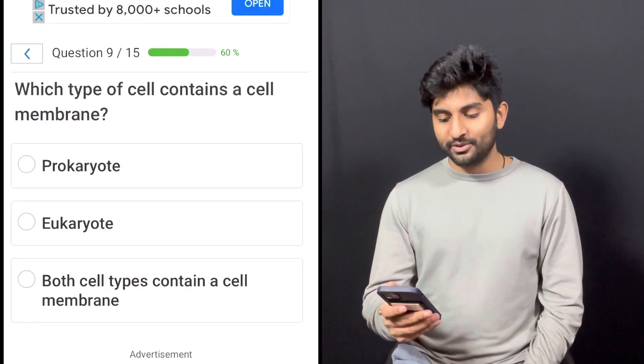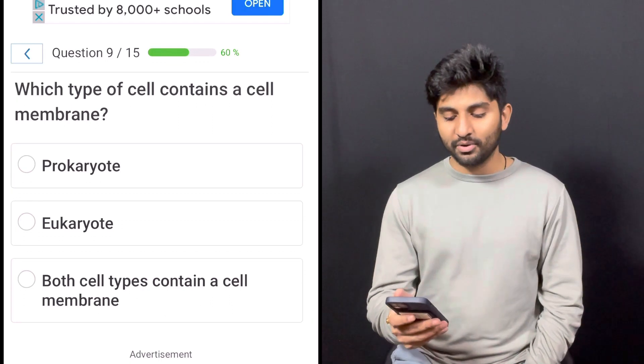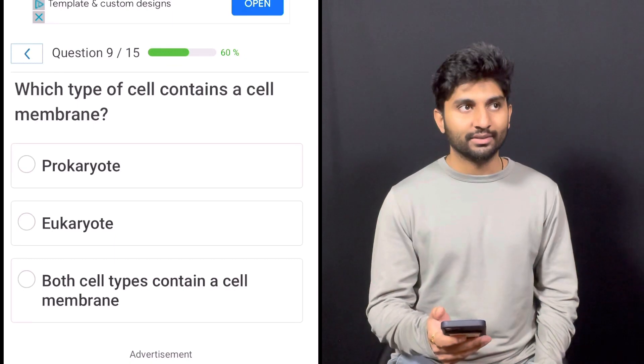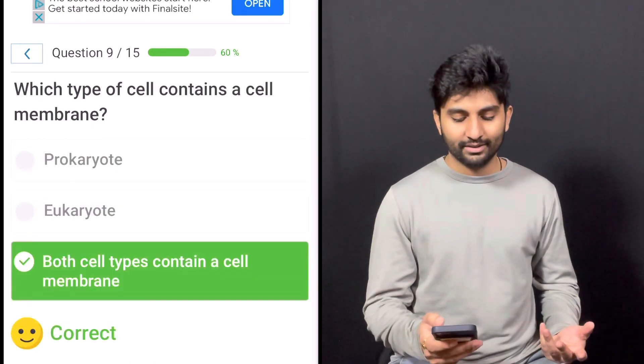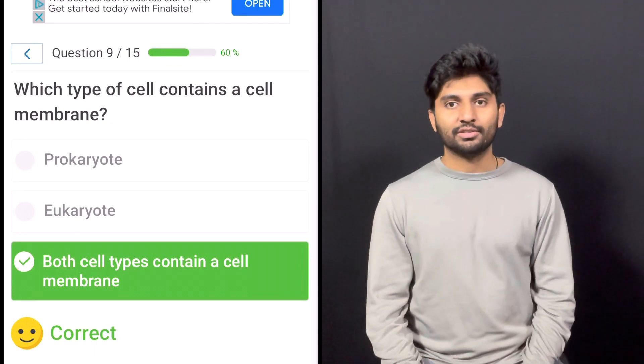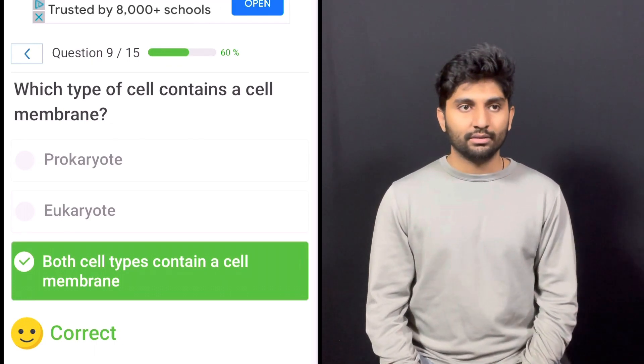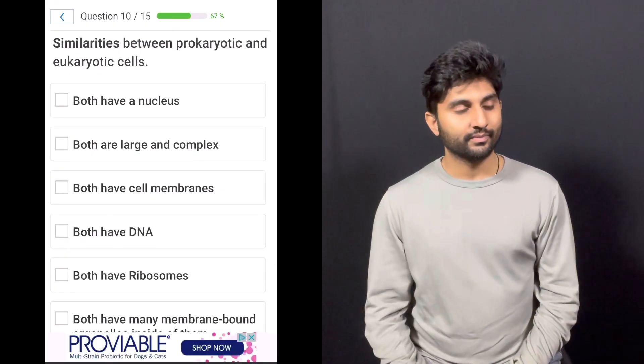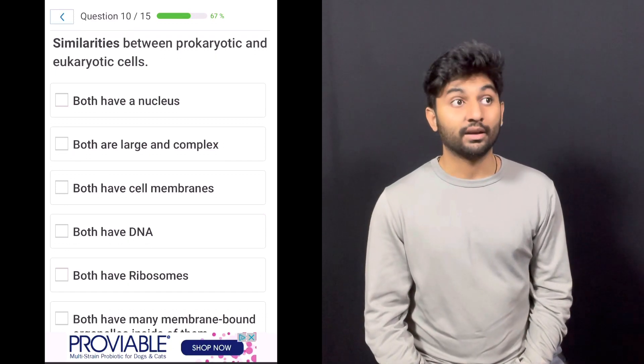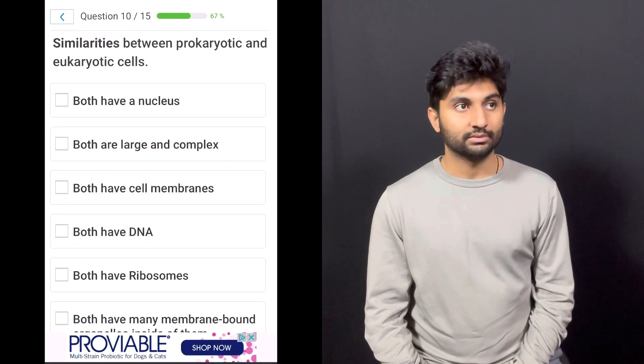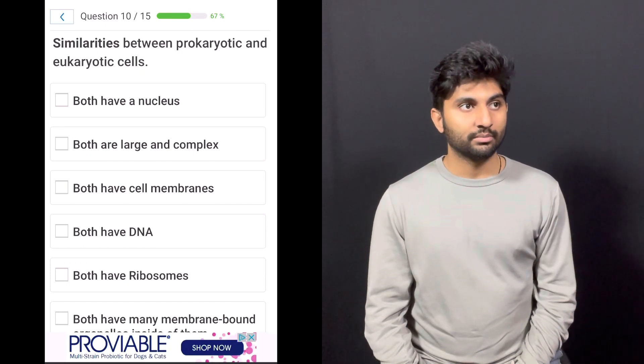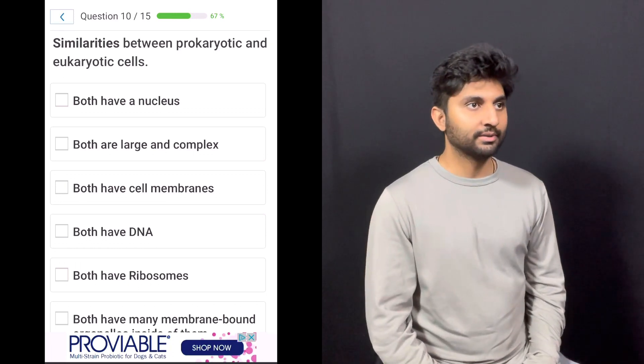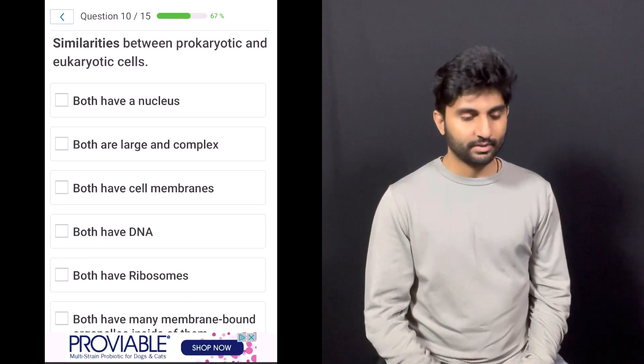Question nine. Which type of cell contains a cell membrane? Prokaryotic, eukaryotic, or both cell types contain a cell membrane? And I think they both contain a membrane. Yeah. It's not that prokaryotics don't have a membrane, but they don't have membrane-bound organelles like we have mitochondria and stuff. But they do have cell walls made of peptidoglycan, and that's how you stain gram-negative versus gram-positive bacteria. They have that for protection, too.